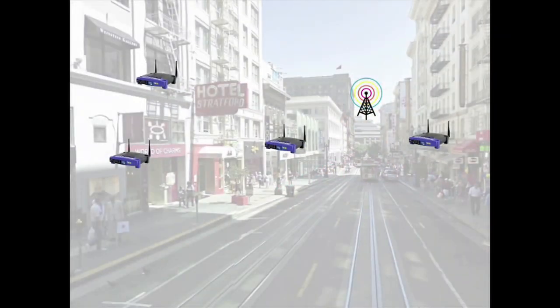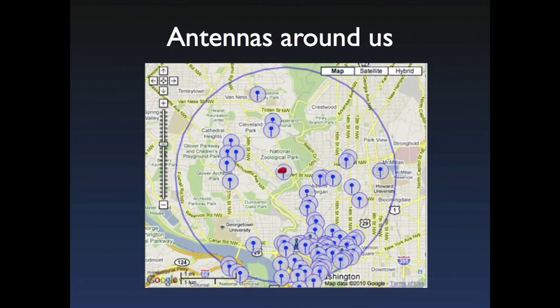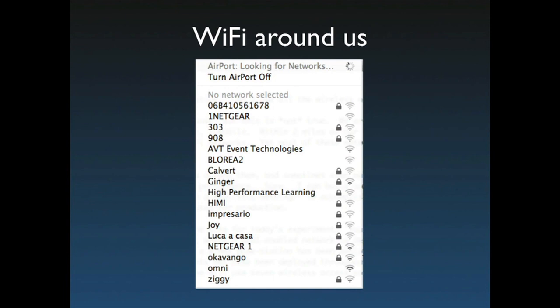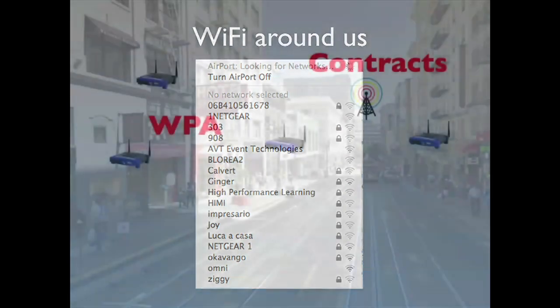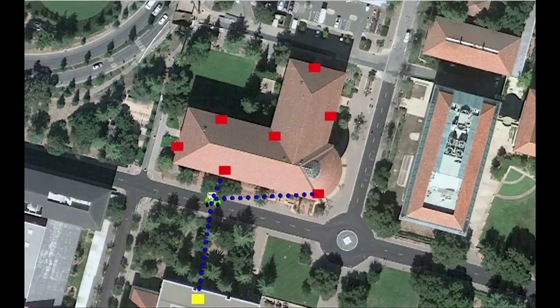There's a common perception that wireless capacity is scarce and in short supply, but this is not true. We are surrounded by plenty of capacity. In most locations, your cell phone could have coverage from five or more service providers and ten or more Wi-Fi networks, yet most of these are off-limits to us. My team and I are aspiring to change this.